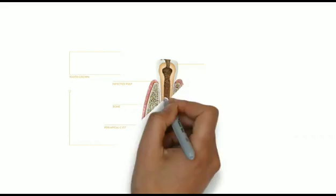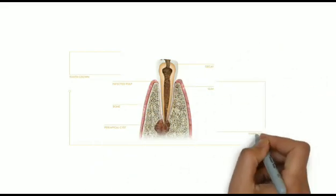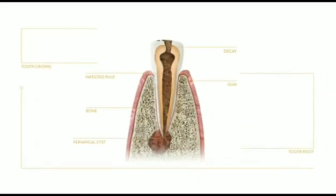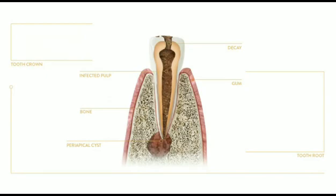Epithelium at the apex of a non-vital tooth can be stimulated by inflammation to form a true epithelium-lined cyst, called a periapical cyst.